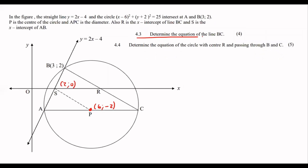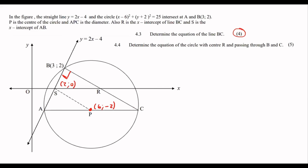Question 4.3: determine the equation of the line BC for four marks. BC is over here. I instantly noticed that this line is a diameter, which means that this angle here is 90 degrees — because angles in a semicircle always make a 90-degree angle. So this line and this line are perpendicular to each other, which means we can easily work out the gradient.